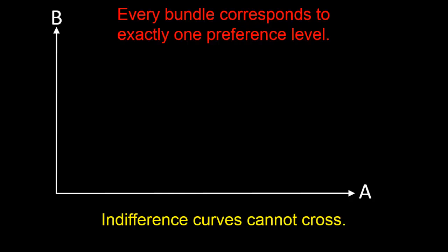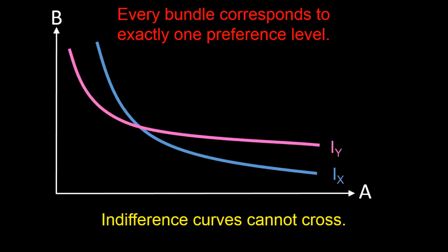So now, let's draw two indifference curves. The first indifference curve will be labelled Ix. It has a preference level of x. I'm now going to draw a second indifference curve,